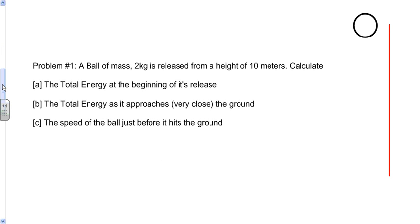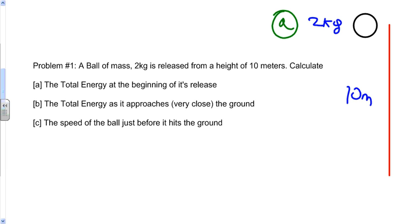Here's the first problem. A ball of mass 2 kilograms is released from a height of 10 meters. They want us to find the total energy at the beginning of its release, the total energy as it approaches very close to the ground — just before it hits but not actually hitting — and the speed of the ball just before it hits the ground. I'm labeling position A at the top and position B and C at the bottom.